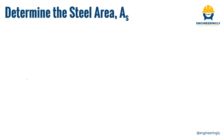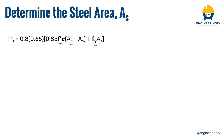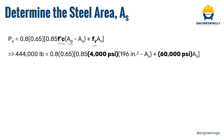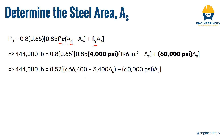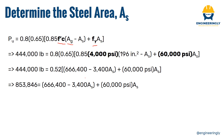With the dimensions established, the next step is to calculate the required steel area using the ACI 318 formula. The known values are the compressive strength of concrete, the gross sectional area of 196 square inches (14×14), and the yield strength of steel. Substituting these into the formula and simplifying yields 187,446 equals 56,600 times the steel area, giving a required steel area of 3.31 square inches.